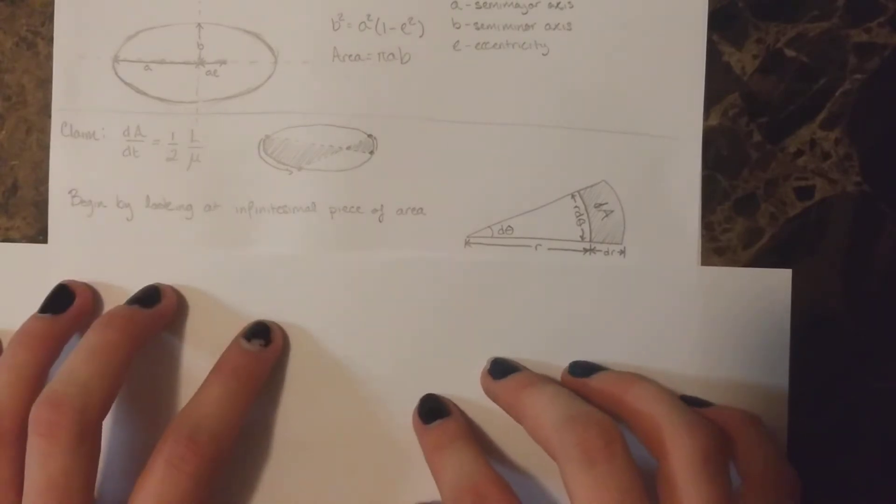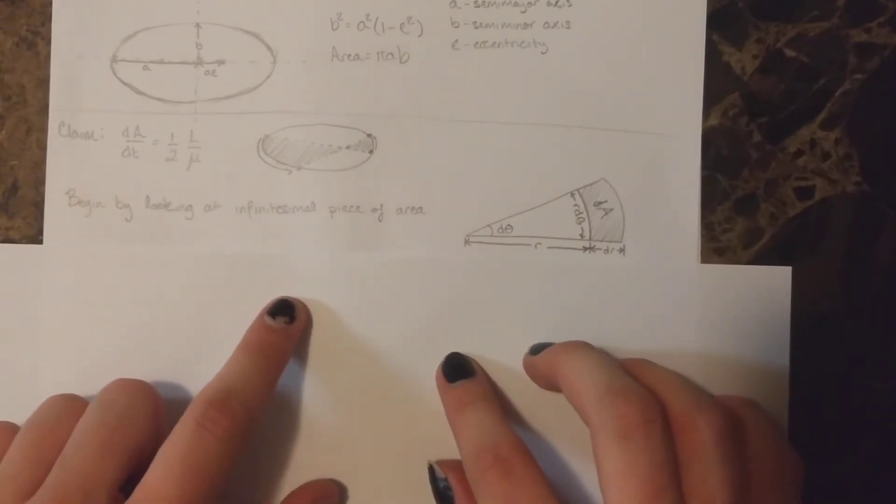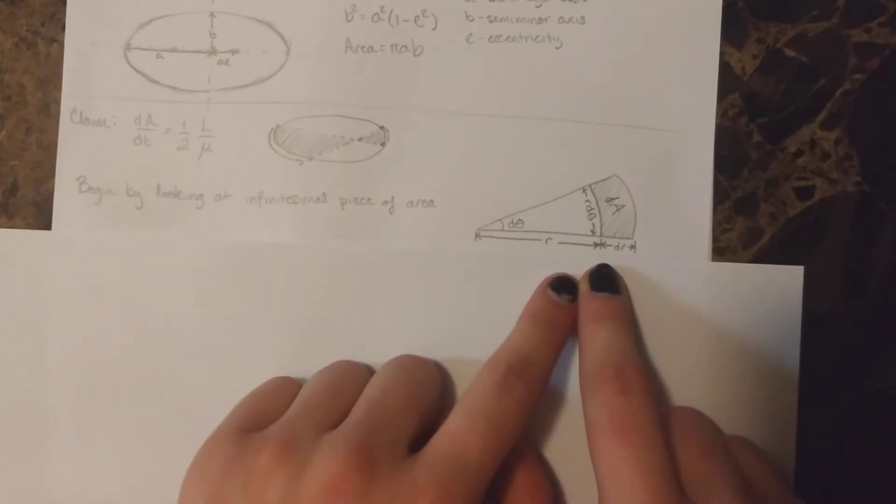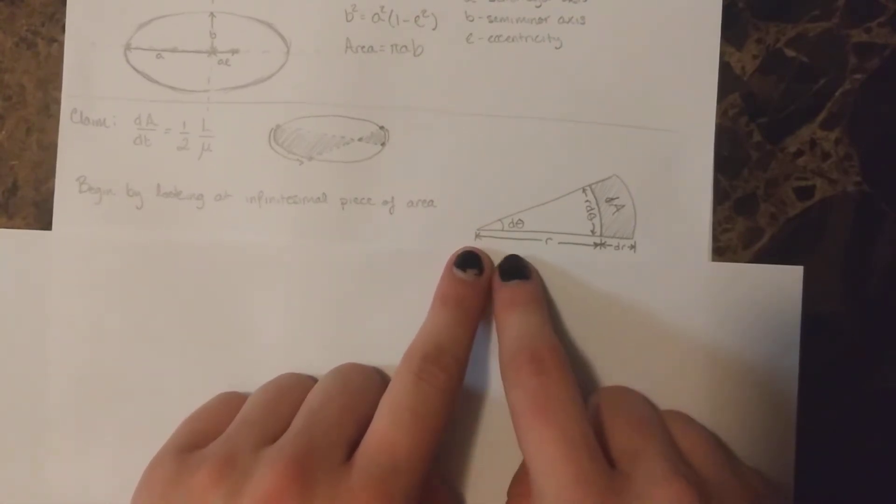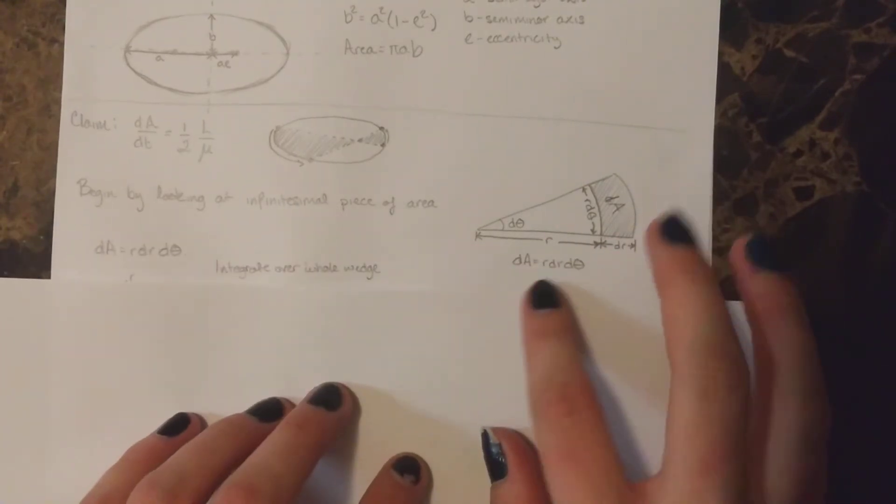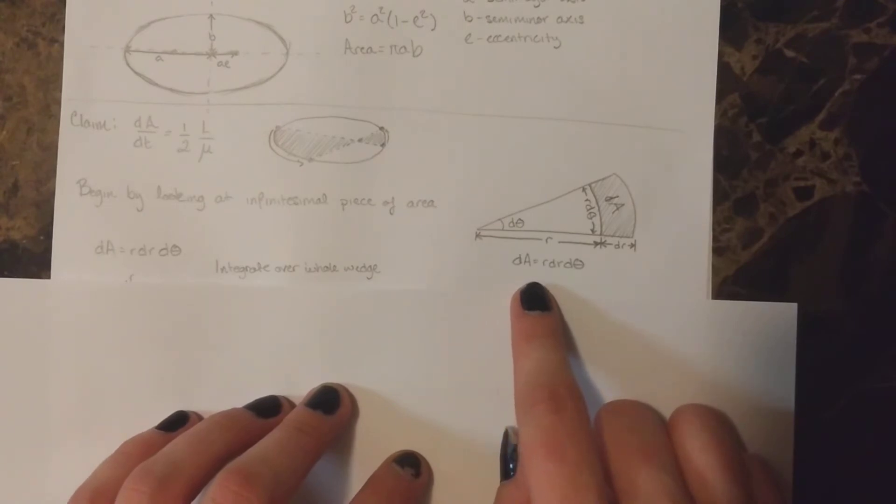We'll begin by looking at an infinitesimal piece of area over this small wedge. So this is the radius r, and it sweeps out a d theta. So this arc length is r d theta, and a tiny change in the radius is dr. Note that the dA here is equal to r dr d theta.